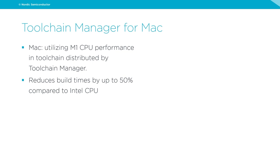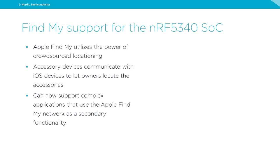The toolchain manager for Mac now utilizes the M1 CPU performance. The toolchain is distributed by the toolchain manager and reduces build times by up to 50% compared to Intel CPUs. Moving on to Find My support for the NRF5340 SoC: the Apple Find My network utilizes the power of crowdsource locationing, and accessory devices can communicate with iOS devices to let owners locate the accessories. This can now support complex applications that use Apple Find My as a secondary functionality on the NRF5340 SoC.